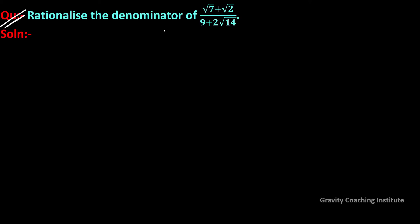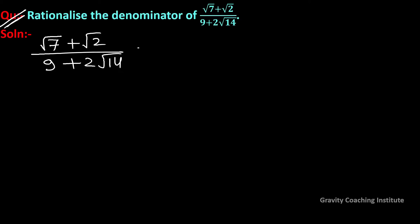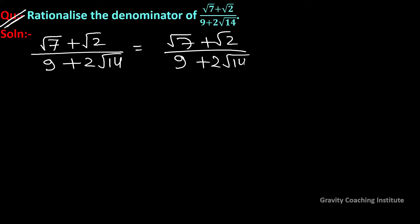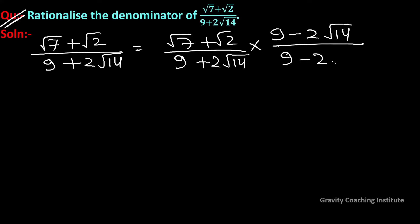Question: rationalize the denominator of (√7 + √2) / (9 + 2√14). So we have √7 + √2 upon 9 + 2√14, which equals √7 + √2 upon 9 + √14. We multiply the denominator by its conjugate: (9 - √14) / (9 - √14).